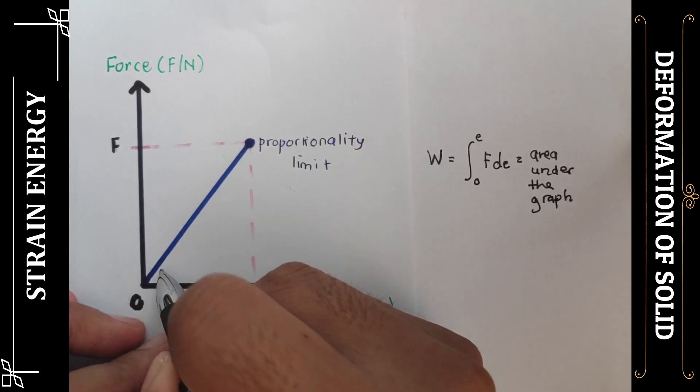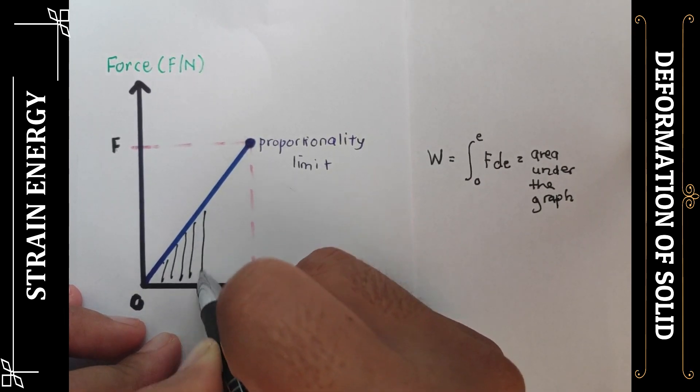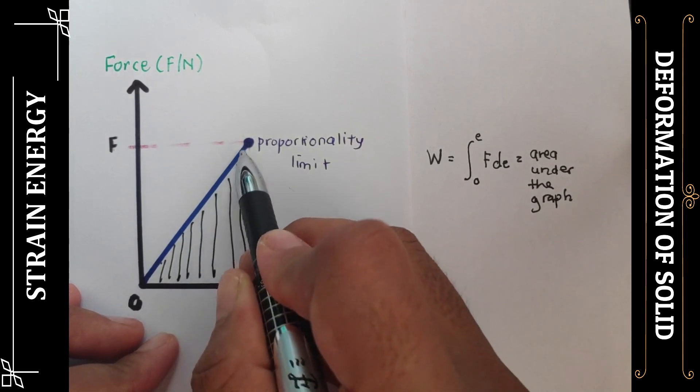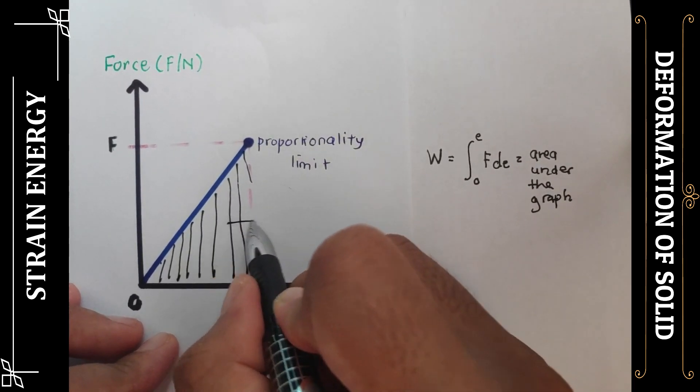As you can see here, the shaded area is the area under the graph, and you can see that this is the area of a triangle.